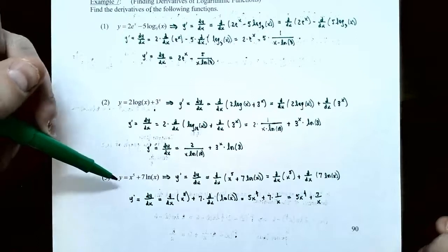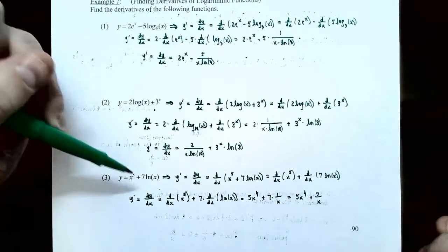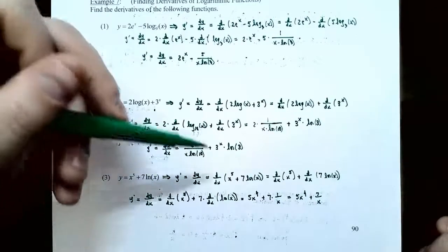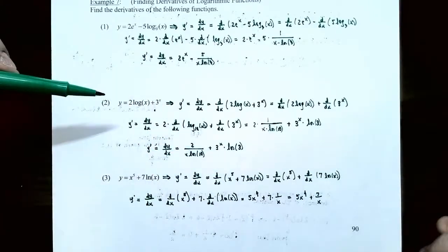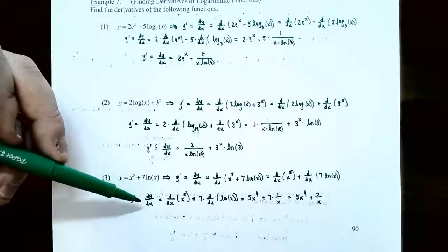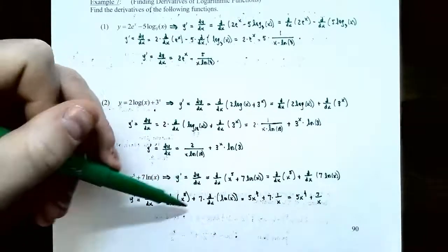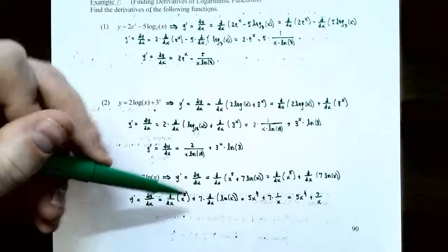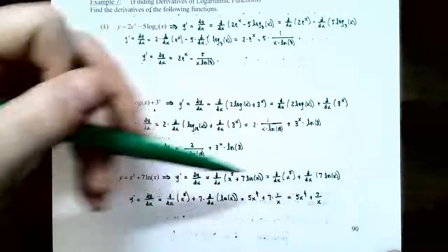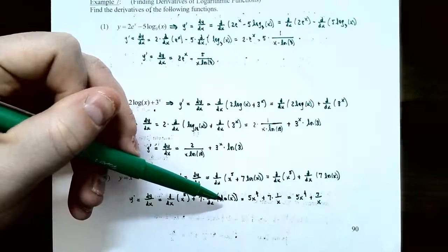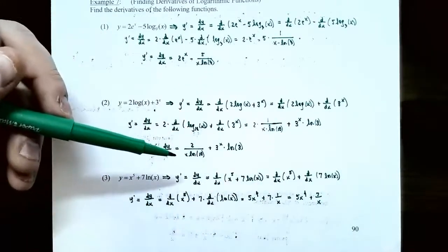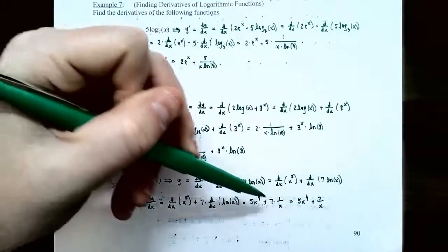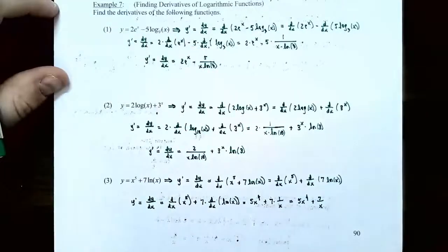Number 3: take the derivative of y equals x to the fifth power plus 7 times natural log of x. Take the derivative of each term separately. For x⁵, use the power rule: bring 5 down as a coefficient and subtract 1 from the power, giving 5x to the fourth. The coefficient 7 stays, and the derivative of natural log of x is 1 divided by x, so you get 7 times 1 over x. Simplified: y prime equals 5x to the fourth plus 7 divided by x.